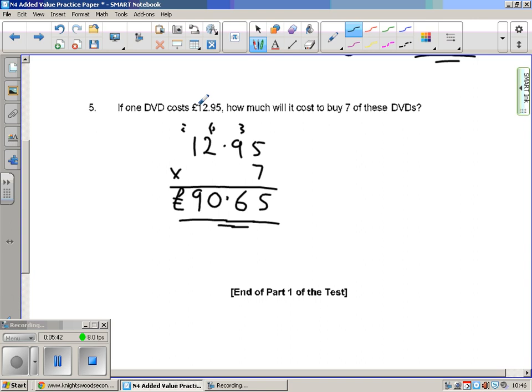If one DVD costs £12.95, how much will it cost to buy seven of these DVDs? Well we could do twelve point nine five plus twelve point nine five plus twelve point nine five, but multiplication is a shortcut for doing lots and lots of additions. So just multiply: five sevens are thirty five, carry the three. Nine sevens are sixty three, carry the three to make sixty six. So units column down the six, carry the six. Two sevens are fourteen, add on six is twenty. Zero down, carry the two. One times seven is seven, add on the two is nine. Ninety pound sixty five.